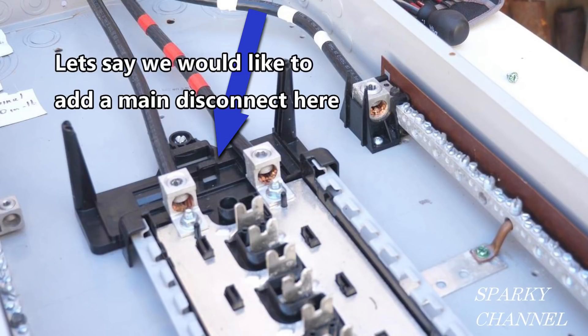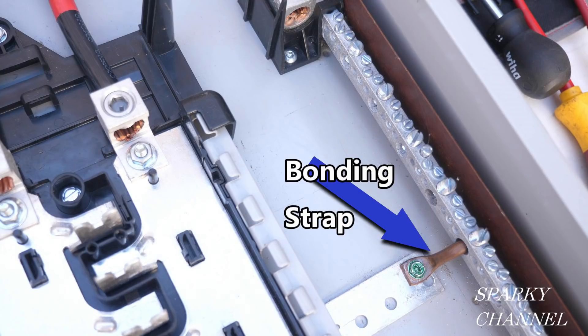In that case, we would need to bond the ground and the neutral in this panel. So we would connect the bonding strap to the neutral bar in this panel.